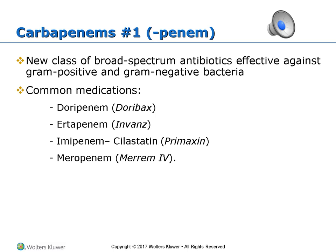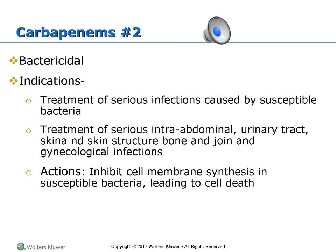Carbapenems are a newer class of broad-spectrum antibiotics effective against both gram-positive and gram-negative bacteria. Common ones you'll see are Invanz and Primaxin, used at Hannibal Regional. Primaxin is used for treatment of bone, joint, skin, and soft tissue infections. When carbapenems first came out, they had fatal GI toxicities, but newer carbapenems are not as toxic.